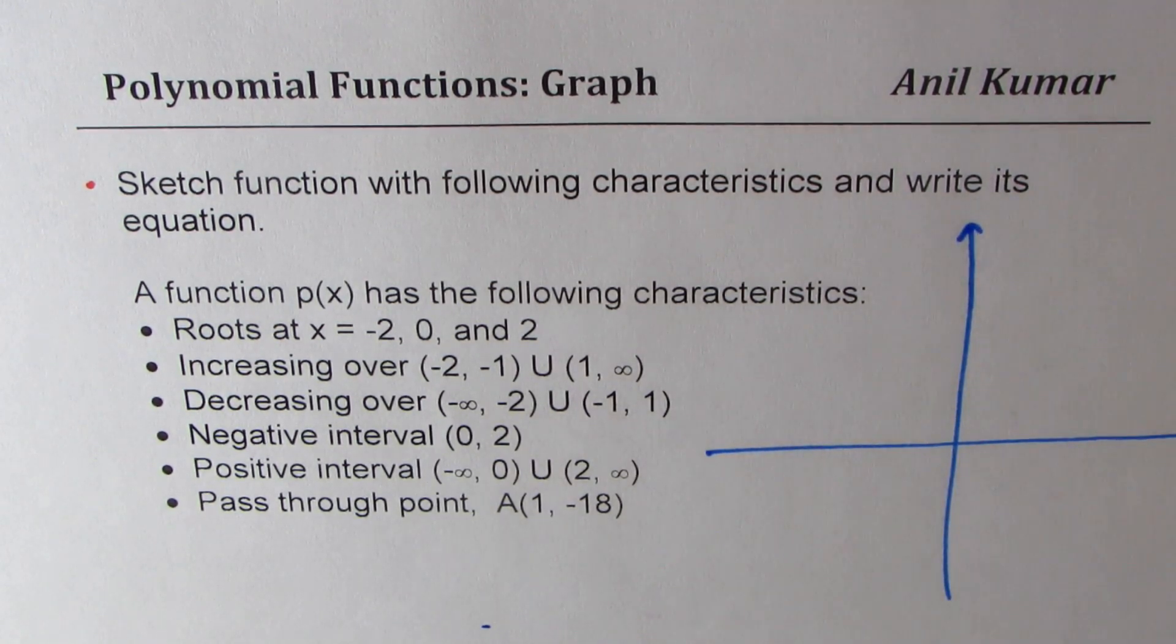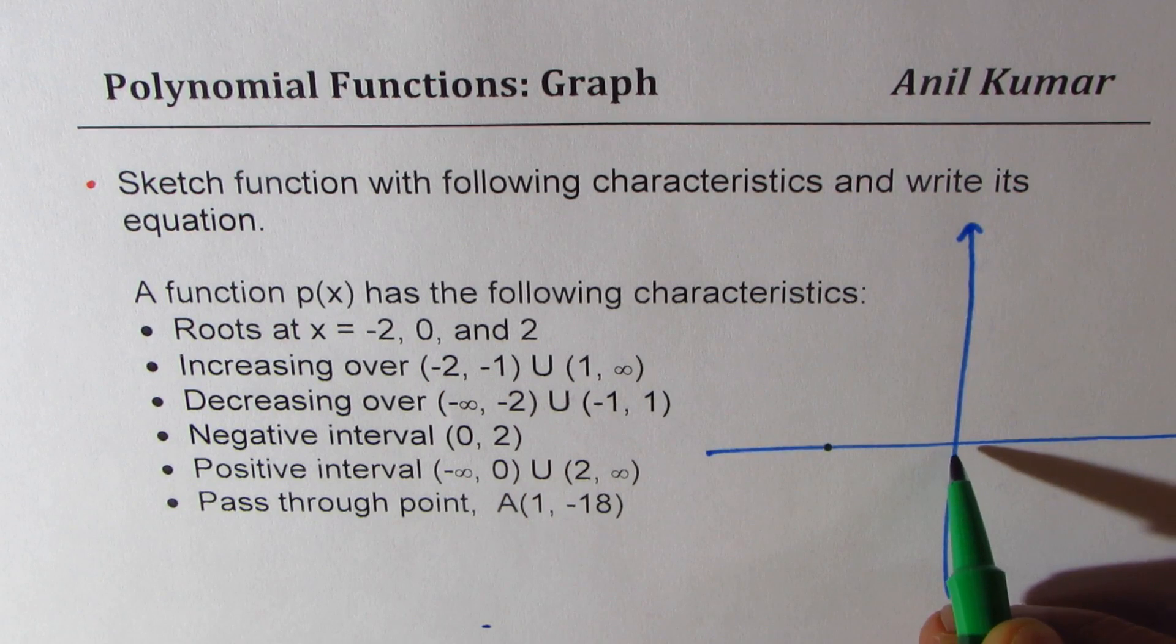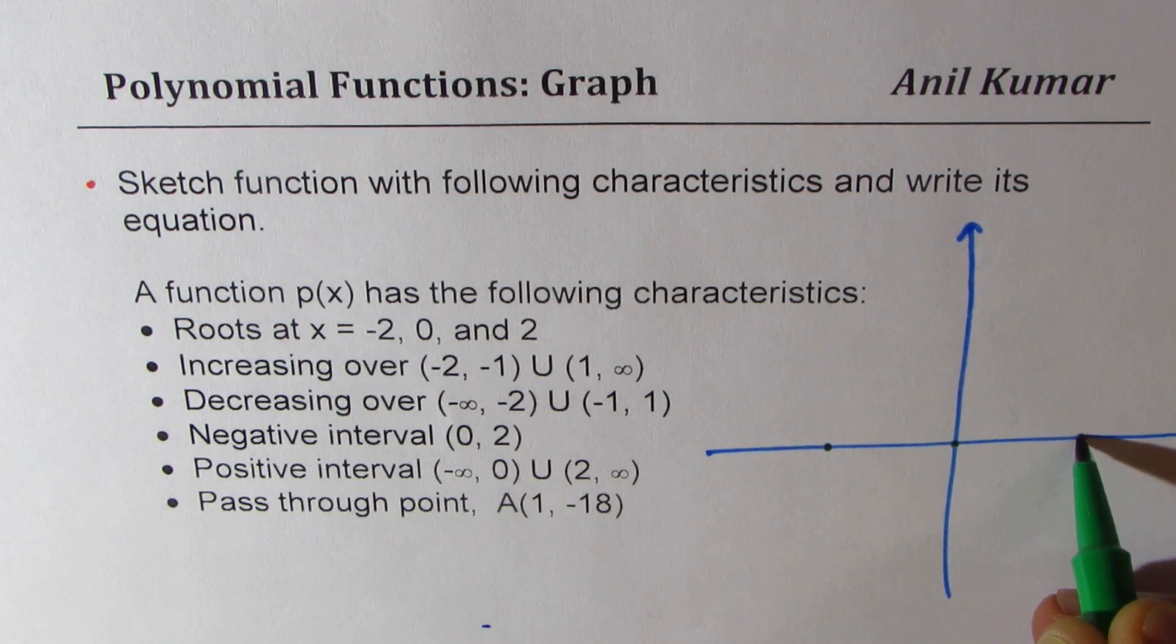Let's begin with the roots. We are given three roots here: one is at minus 2, then we have at 0, and at 2.